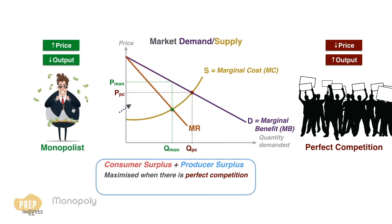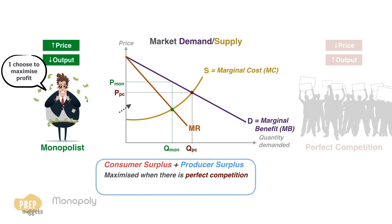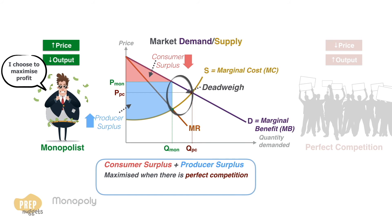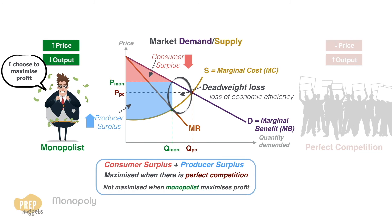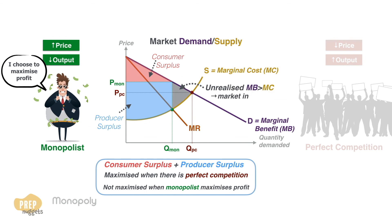However, when a monopoly seeks to maximize profit by producing at the level where MR equals MC, it increases its producer surplus but at the expense of consumer surplus. Not only is this unfair to consumers, there is a deadweight loss, which is a loss of economic efficiency. This is created because the monopoly produces a quantity that does not maximize the sum of consumer surplus and producer surplus. From the market perspective, monopoly is considered inefficient because the area where marginal benefit is still greater than marginal cost is not realized.